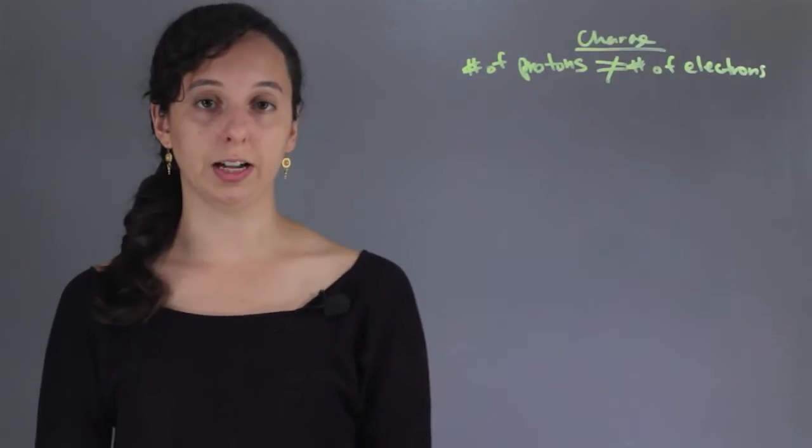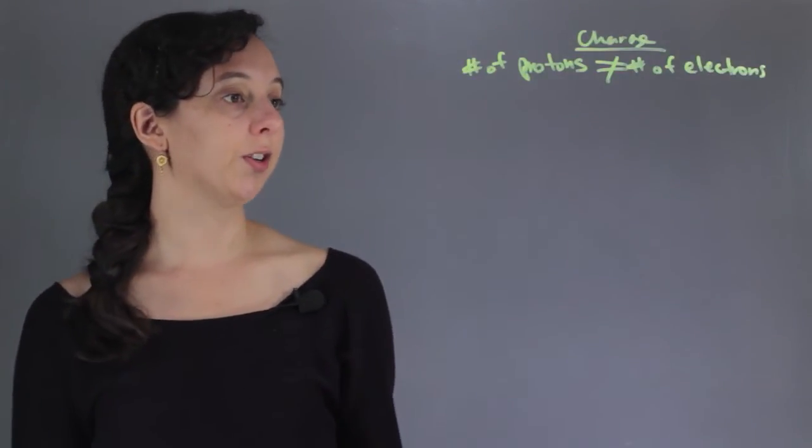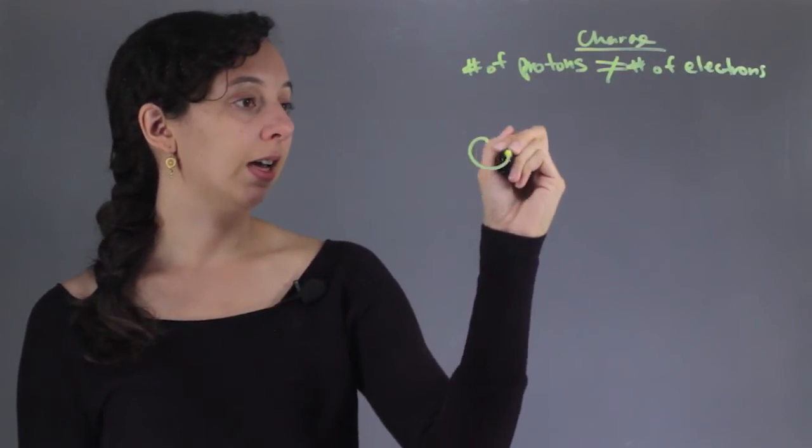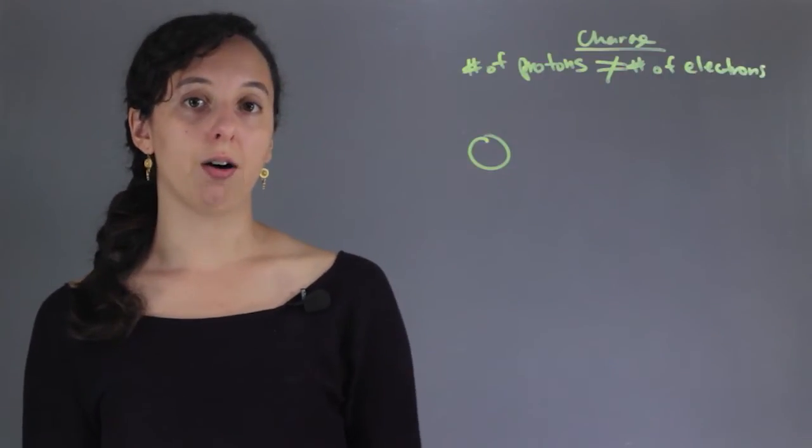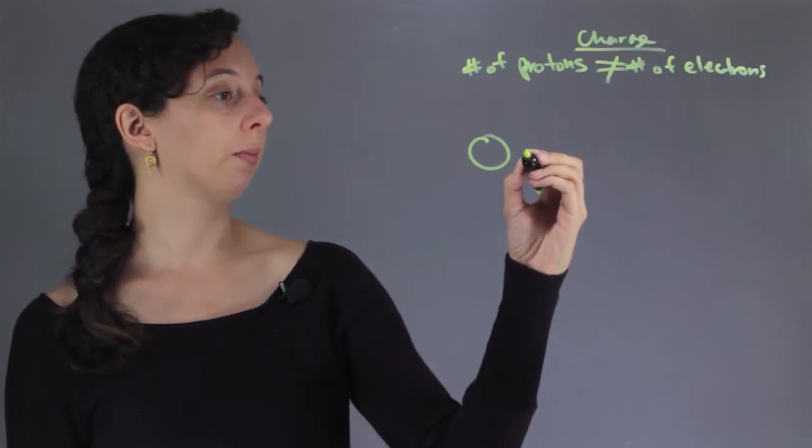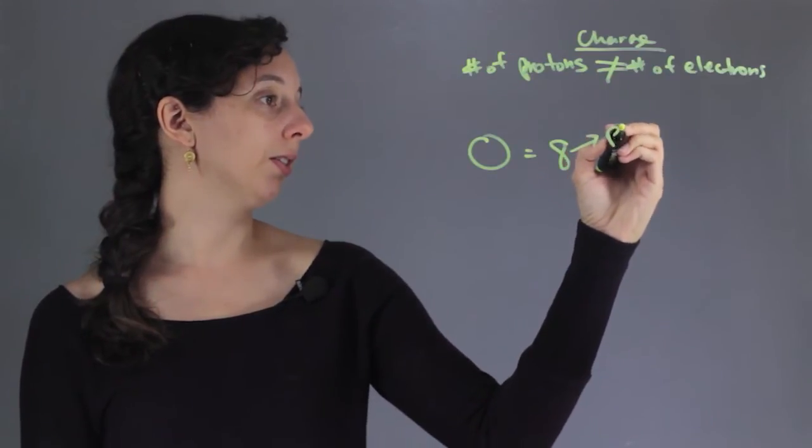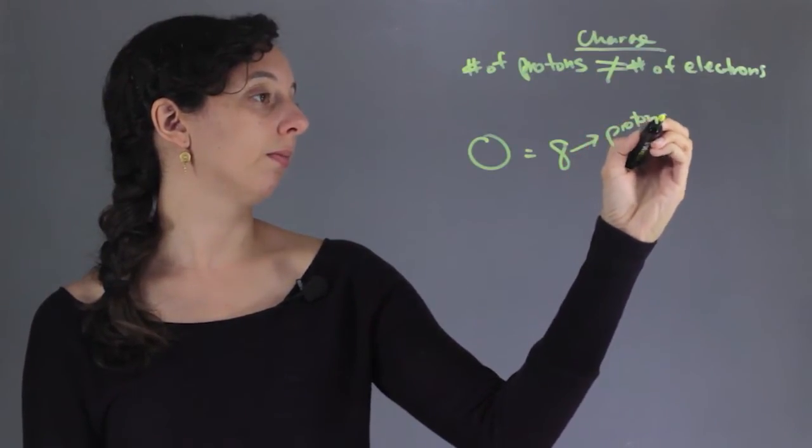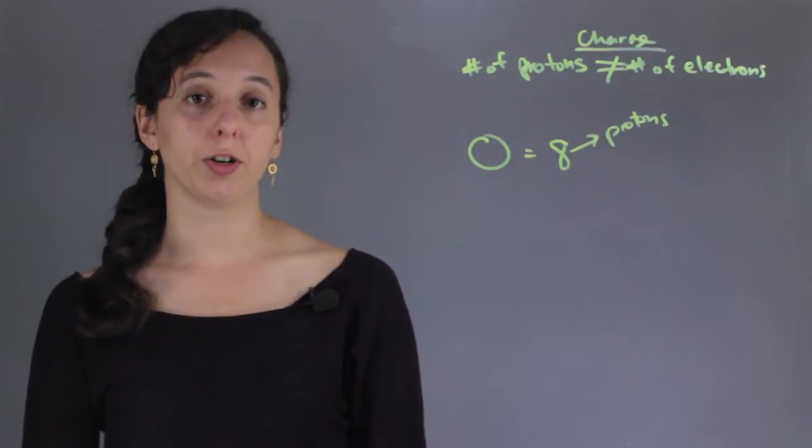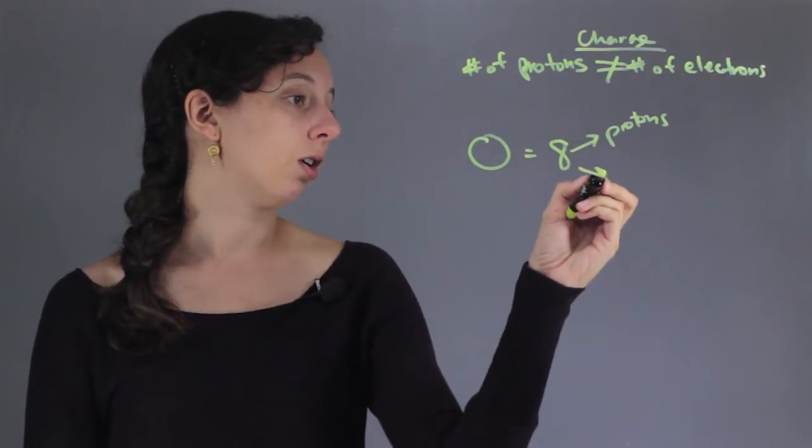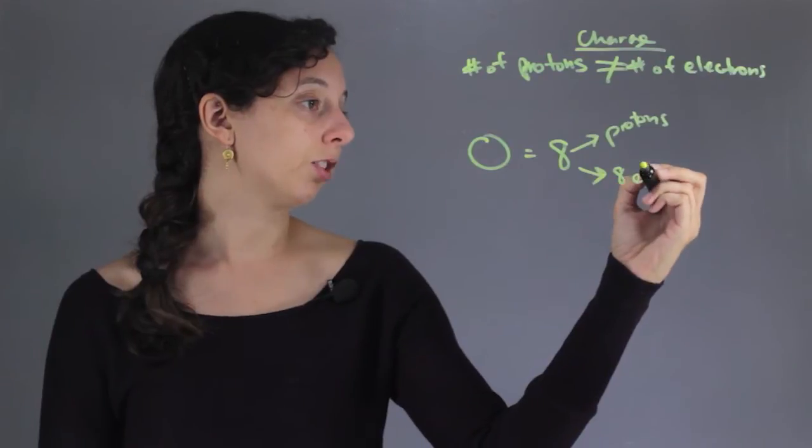Let's go over a couple of examples. First, let's say we have an oxygen atom. Now, oxygen is atomic number eight, which means that no matter what, it has to have eight protons. And for the most part, if it's going to be neutral, that means it's also going to have eight electrons.